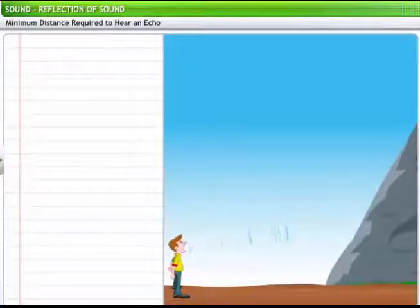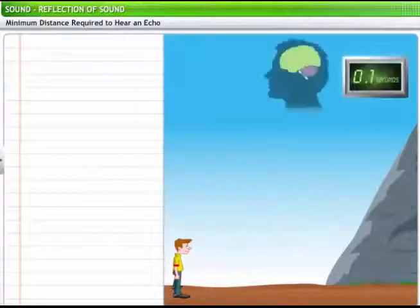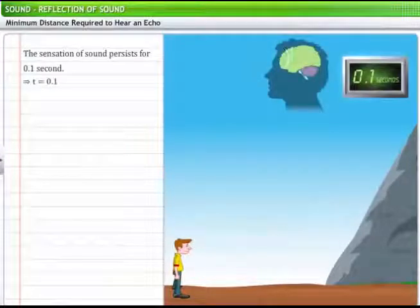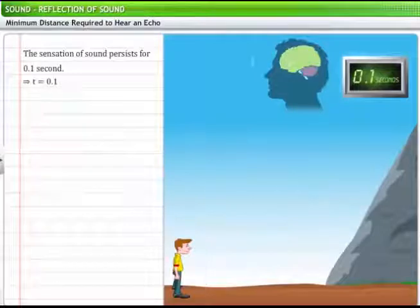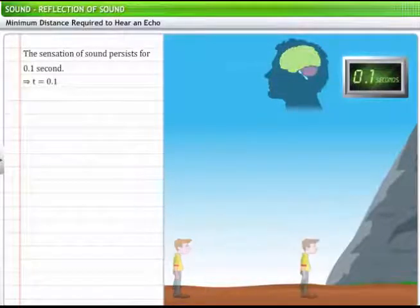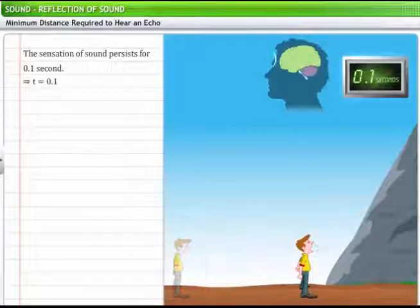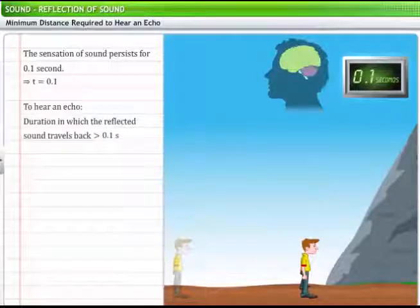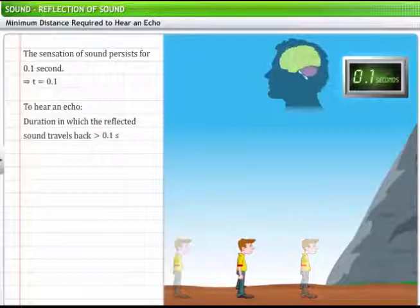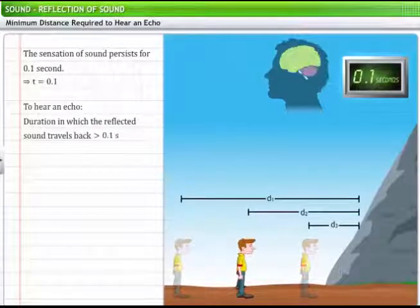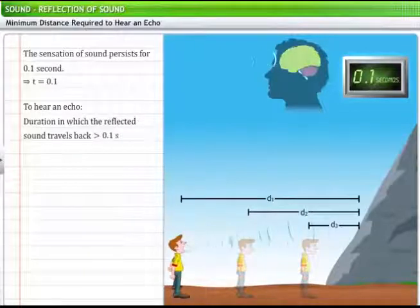To find out how this works, let's examine how our brain processes sound. The sensation of sound persists in our brain for 0.1 seconds. Therefore, to identify an echo, the time interval between the reception of the original sound and the reflected sound should be at least 0.1 seconds. So, how much distance do we need between the source of a sound and the reflecting surface to be sure that we will be able to hear an echo? Let's find out.